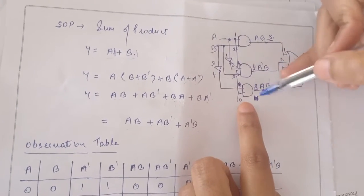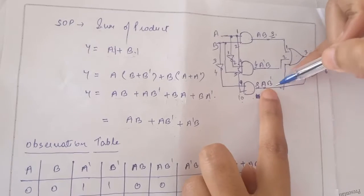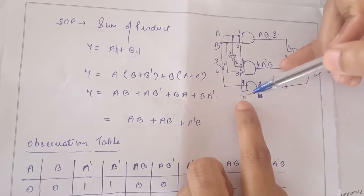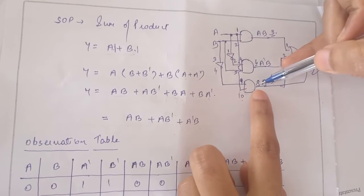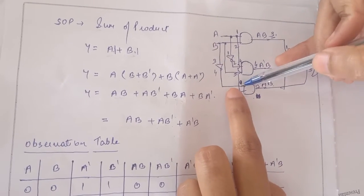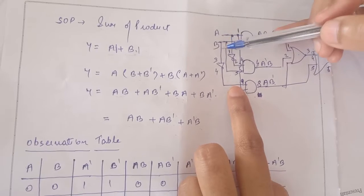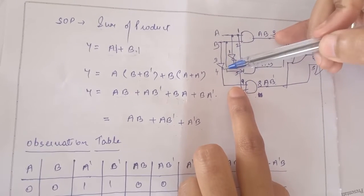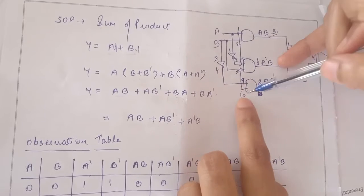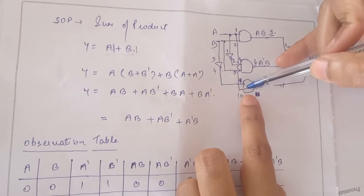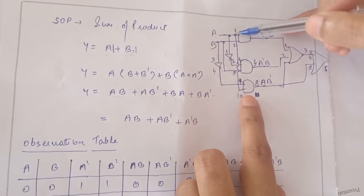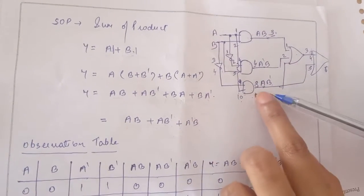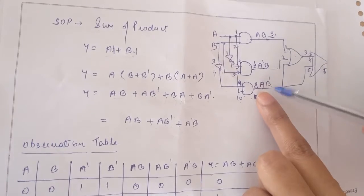The third AND gate will give the output A·B-bar. The input pins are 9 and 10 and the output pin is 8. At pin number 9, the inverted output of B is connected with the help of the NOT gate at pin number 4. And input A is connected at pin number 10. The AND gate connections are now completed.